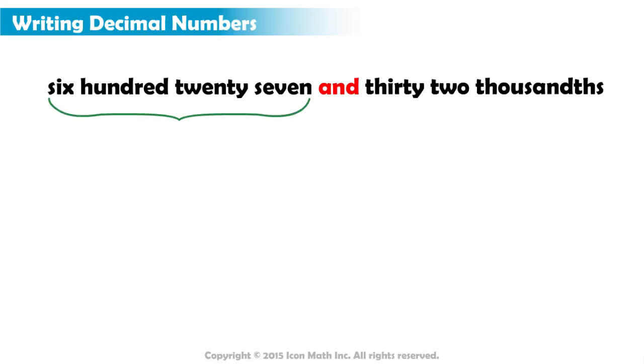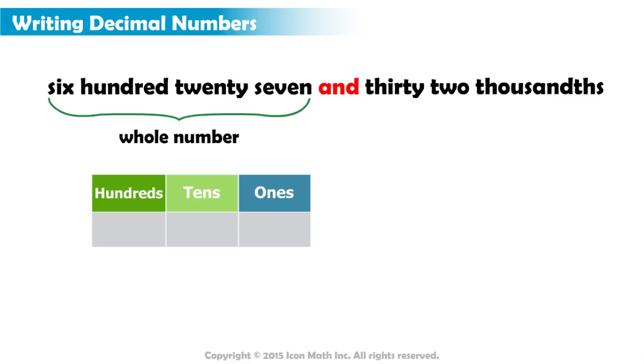The part on the left of the AND is the whole number part. Let us write this number on the chart. We have 627. So, we write 6 in the hundreds place, 2 in the tens place, and 7 in the ones place.